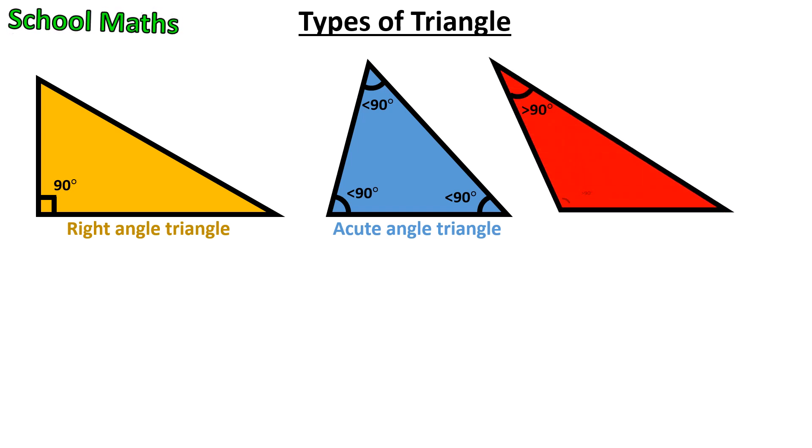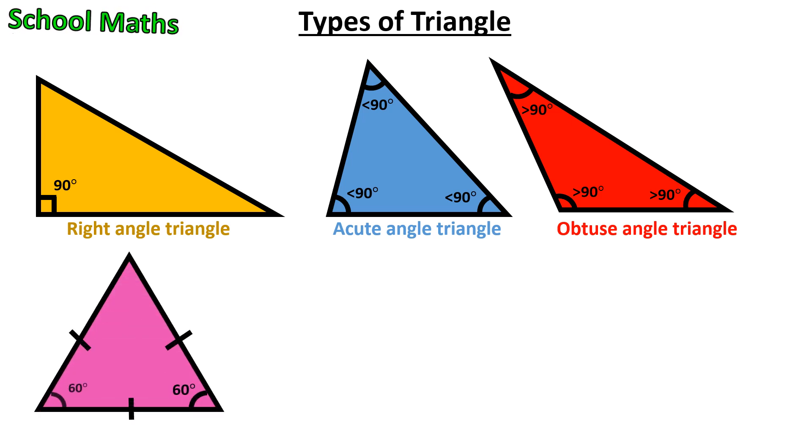Rule for Obtuse Angle Triangle is one of the internal angles must be greater than 90 degrees. Rule for Equilateral Triangle is all the internal angles should be 60 degrees.